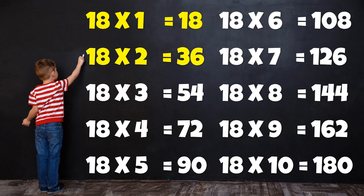Table of 18. 18 1's are 18. 18 2's are 36. 18 3's are 54. 18 4's are 72. 18 5's are 90. 18 6's are 108. 18 7's are 126. 18 8's are 144. 18 9's are 162. 18 10's are 180.